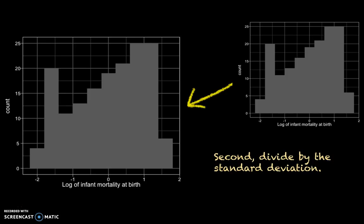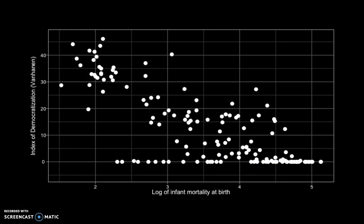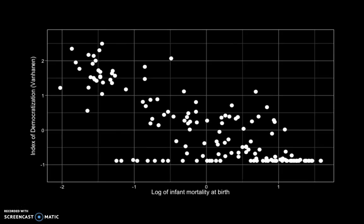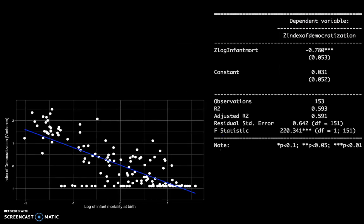We can now revise the scatter plot. The original had a scale from 0 to 40 on the y-axis for democratization and 2 to 5 on the x-axis for the log of infant mortality. We replace that with a plot where 0 on both axes means the average position and 1 means one standard deviation from the mean. We can then estimate the regression line, which by definition passes through the 0,0 position. The relationship has not changed, but the numbers in the regression table have: instead of minus 10.7, we now have minus 0.78.